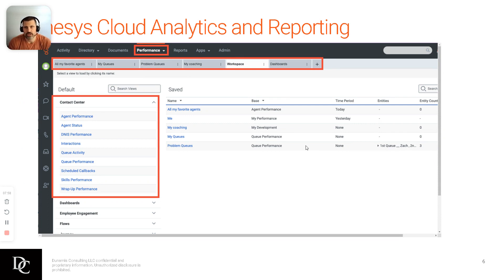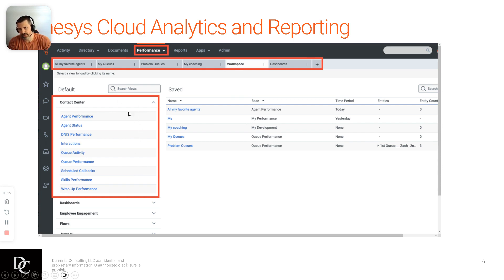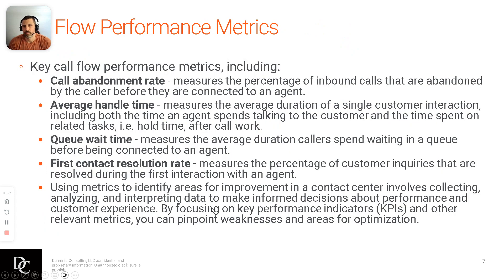Here is the view of that. You can see along the top — Performance is at the very top. There are all the tabs; you can have quite a few and name them however you want. When you highlight the contact center, here are the defaults: agent performance, status, interactions. You can do a whole bunch of things. Dashboards are down there as well — employee engagement, flows — so you'll be able to search by that as well.